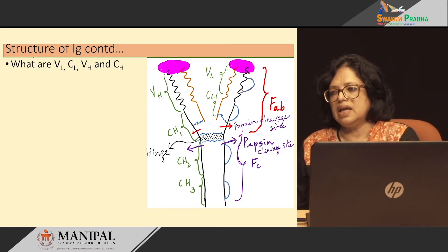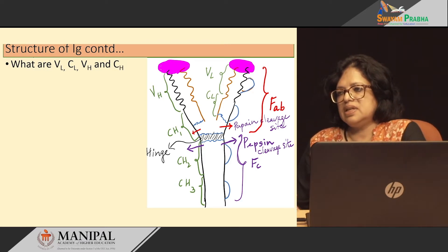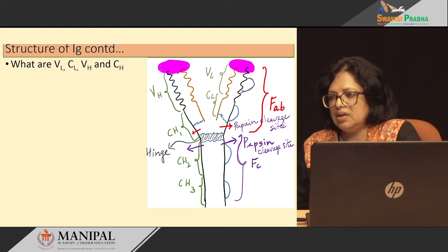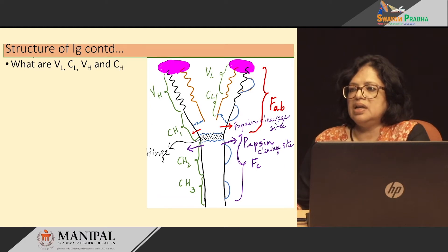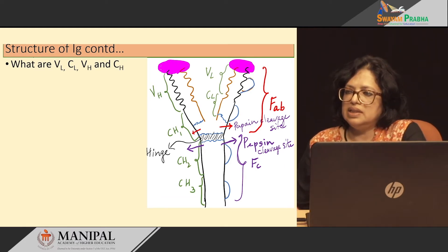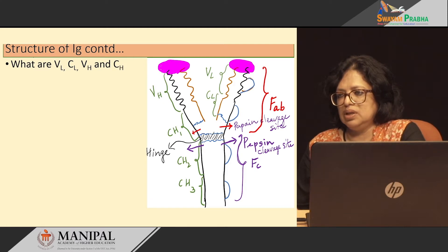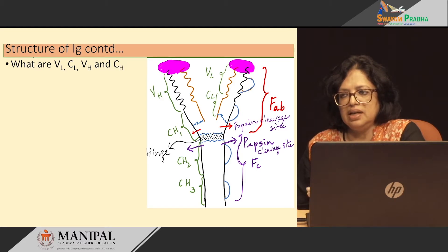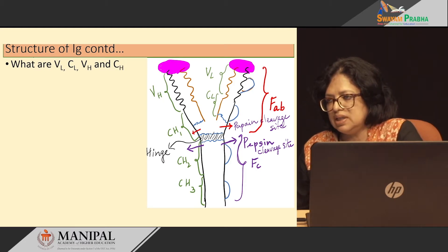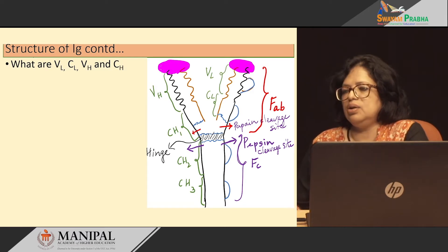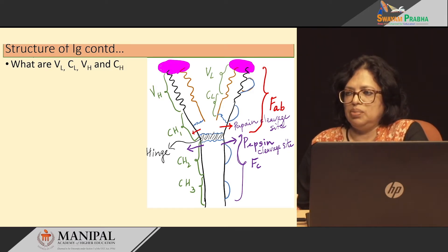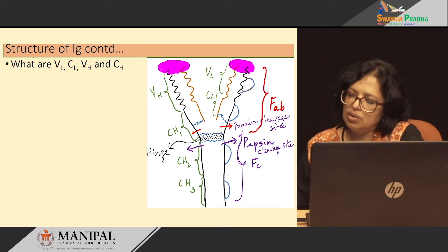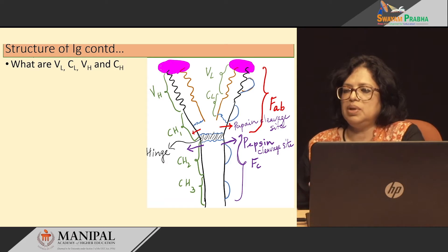If we use another enzyme called pepsin — which is a digestive enzyme found in gastric juice — pepsin cleaves the immunoglobulin below the hinge region, and we get only two pieces of the immunoglobulin molecule: one piece containing two FABs linked together, and another piece below the hinge region which contains only the CH2 and CH3 domains. So pepsin cleavage yields only two pieces from the immunoglobulin molecule.